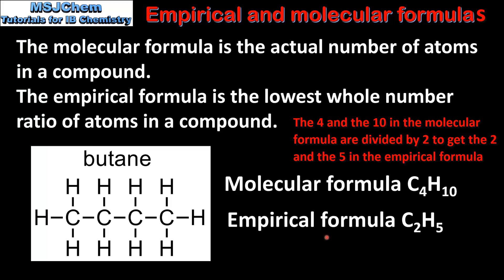The empirical formula of butane is C2H5. This is the lowest whole number ratio of atoms in the compound. As we can see for butane, the molecular formula and the empirical formula are different.